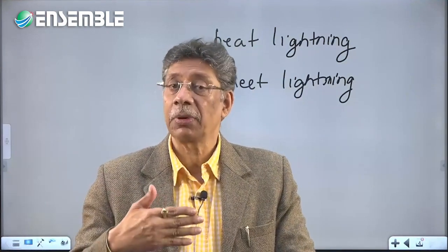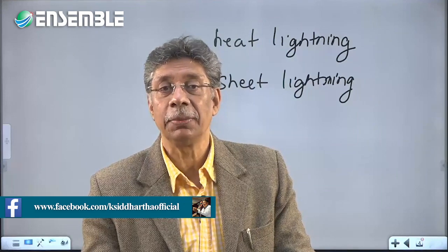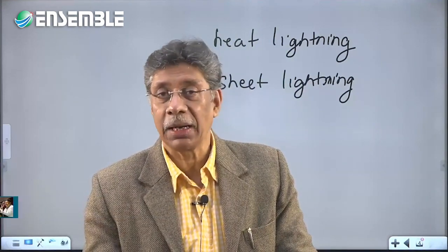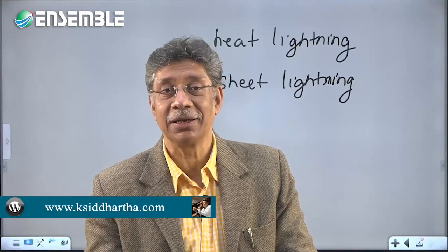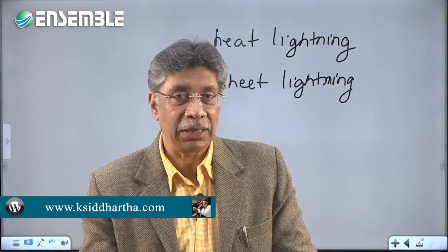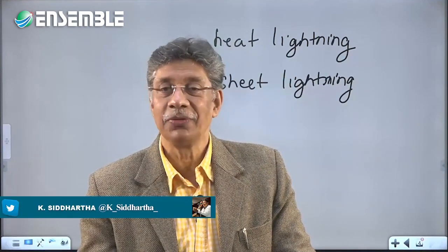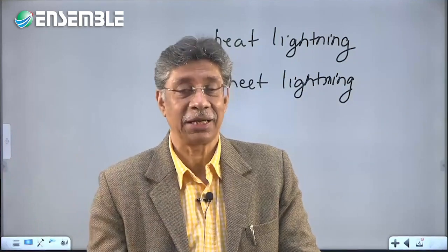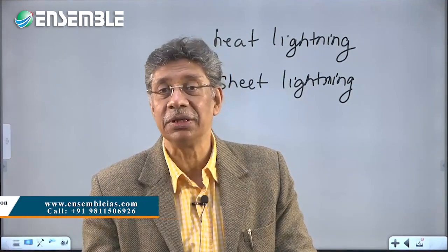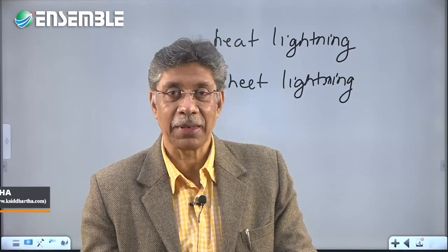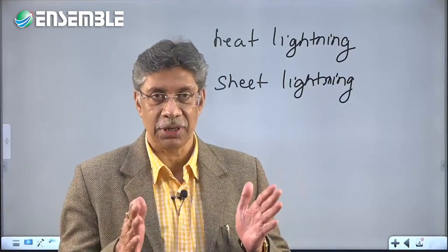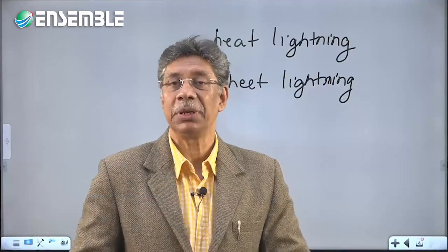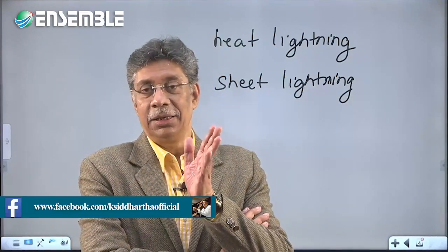Lightning can also be cloud-to-cloud — called sheet lightning — which is a very spectacular variation because it forms brilliant illuminations between the sky and the ground. Such lightning illuminates the entire nighttime sky and is one of the most astonishing geophysical phenomena. These thunderstorms are full of energy — they are an energy reservoir — and they get their energy from condensation taking place in the clouds.